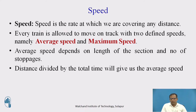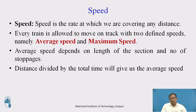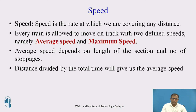Speed is the rate at which we are covering any distance. Every train is allowed to move at three speeds: average speed and maximum speed — which may be on a straight track or on curves. We will see what kind of speed we provide in the railway track and how we run at these speeds on different types of tracks. First, we will see about the average speed or equilibrium speed. The average speed depends on the length of the section and number of stoppages, considering the length of each section and how many stations it covers.